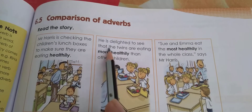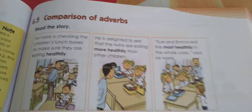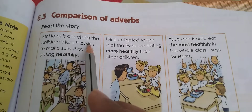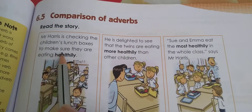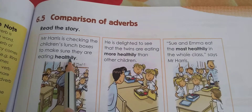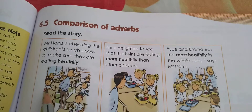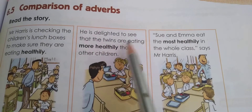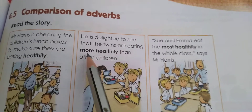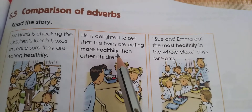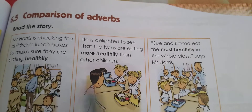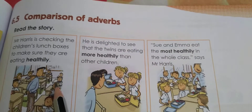We use 'more healthily' — 'more' — when we compare two things. For example, Mr. Harris is checking the children's lunch boxes to make sure they are eating healthily. Here no one is being compared. He is delighted to see that the twins are eating more healthily than other children. Here two things are being compared: twins and other children. So when we compare two things, we use the word 'more.' They are eating more healthily than the children.